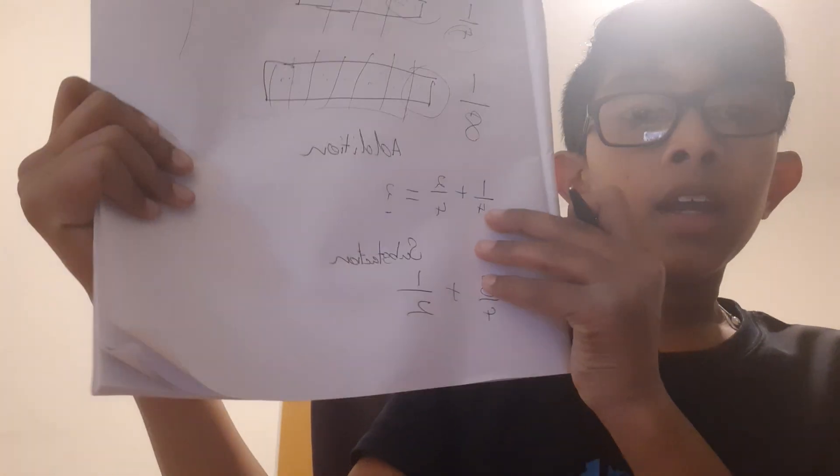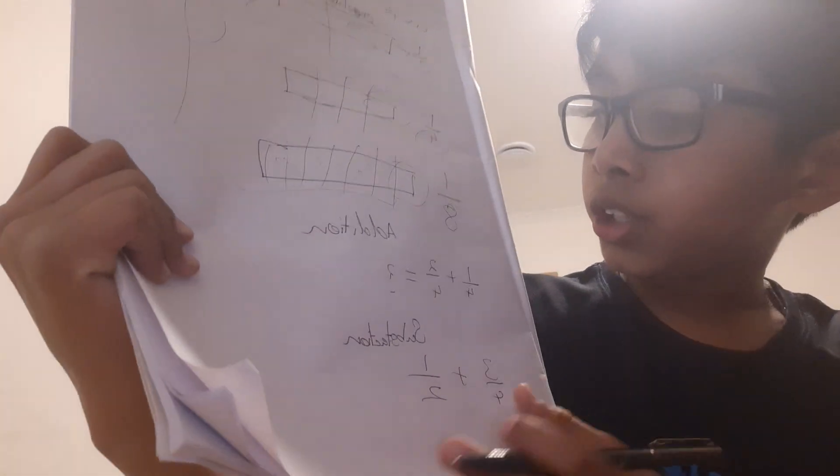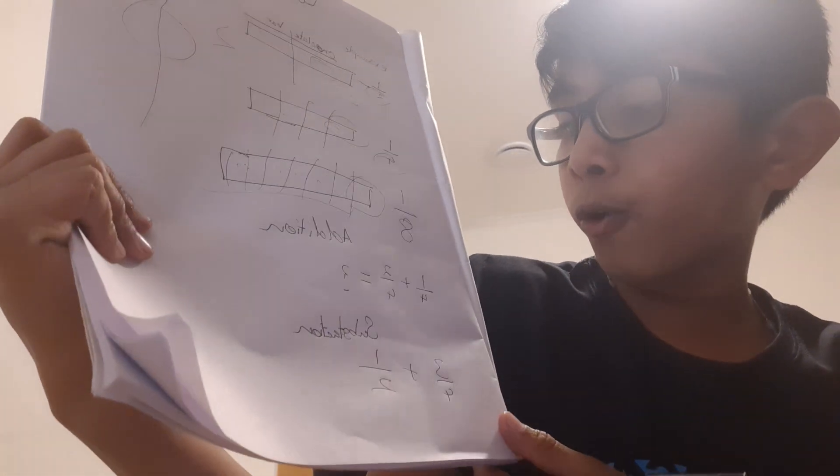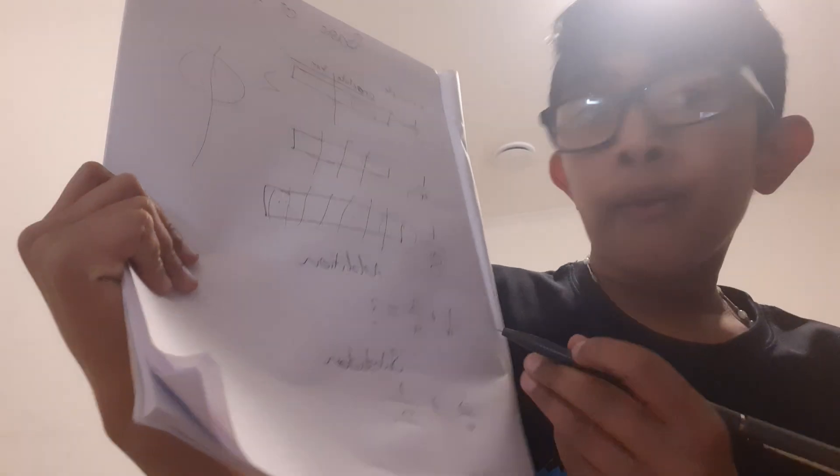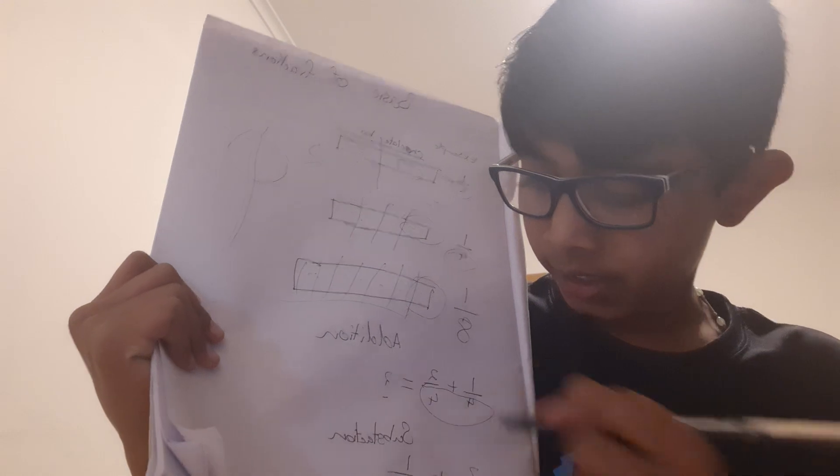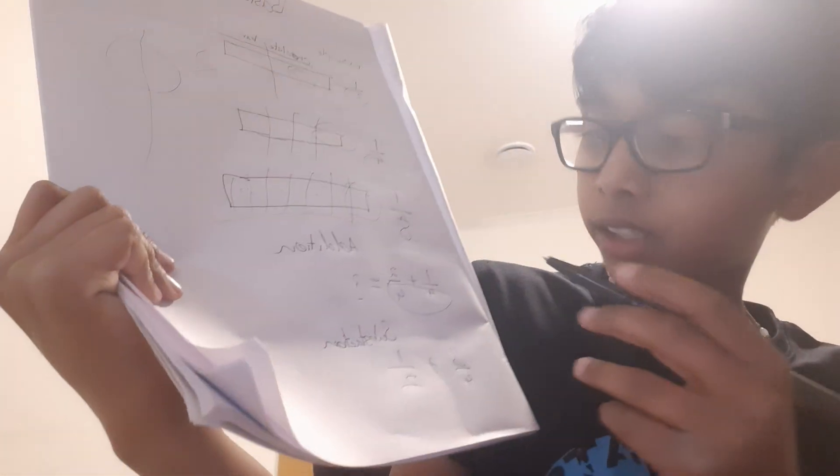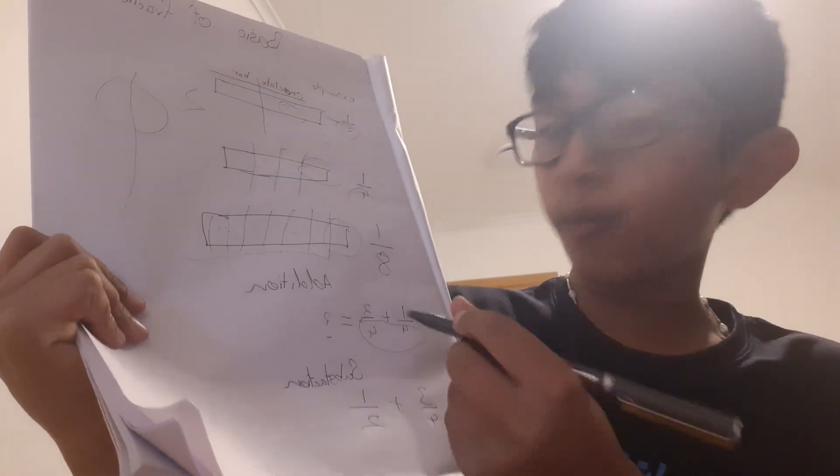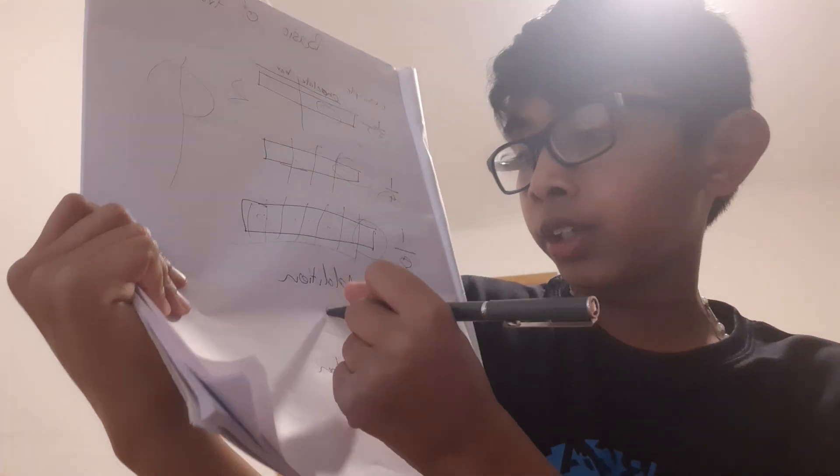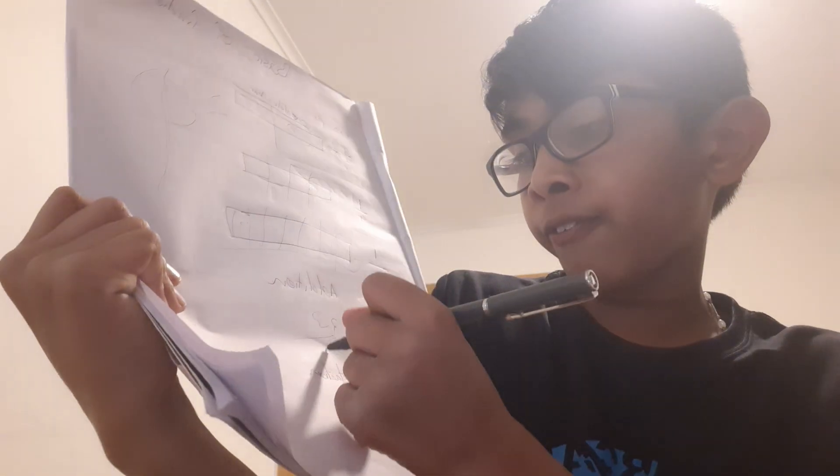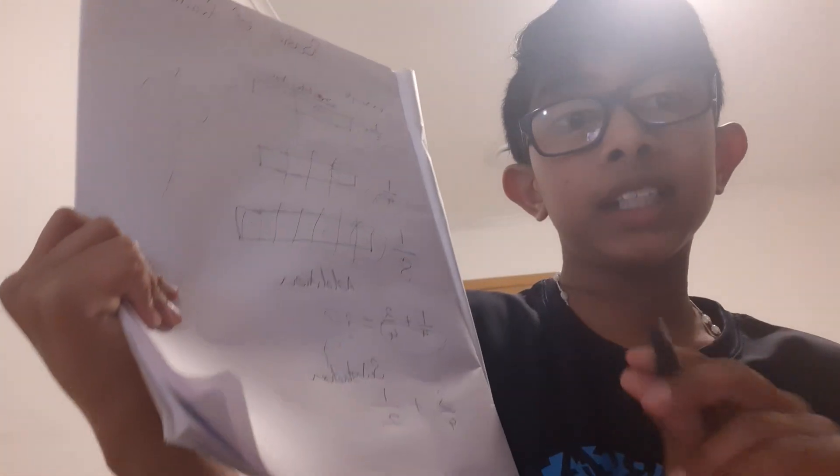Now I'm going to look at addition. So we have here one fourth plus two fourths. What we keep is the denominators - so the denominators stay the same. But the numerator is really simple - like one plus two is three, so you can just do three fourths.